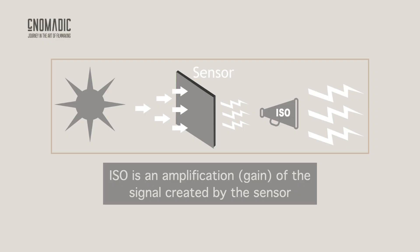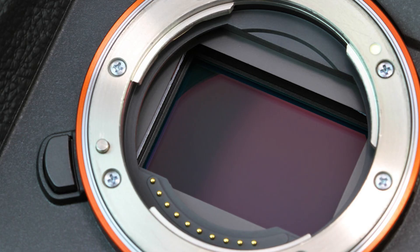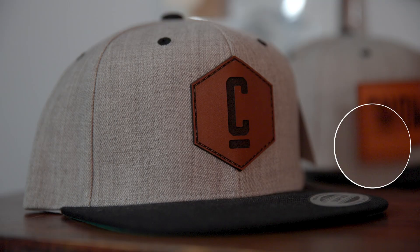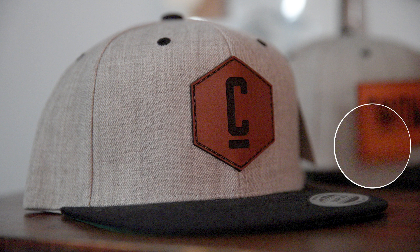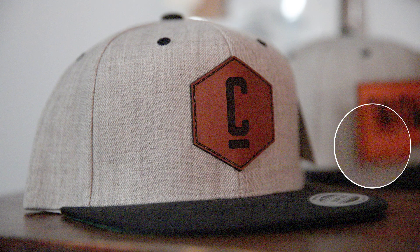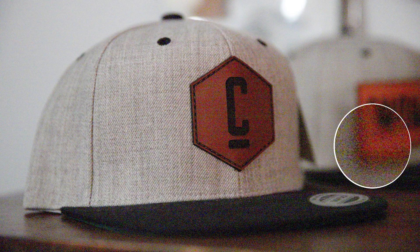Instead of changing the sensor sensitivity, which is set at the manufacturing process, ISO in a digital camera controls the amplification of the electrical signal that the sensor generates when exposed to light. The camera sensor's job is to convert light into an electrical signal, which is then processed to produce the final image. When we adjust the ISO setting, we're changing the amplification or gain of that signal. Increasing ISO makes the image appear brighter, but like any form of gain, it also reduces signal quality and introduces noise. The higher the ISO, the more gain, the more noisy the picture gets.